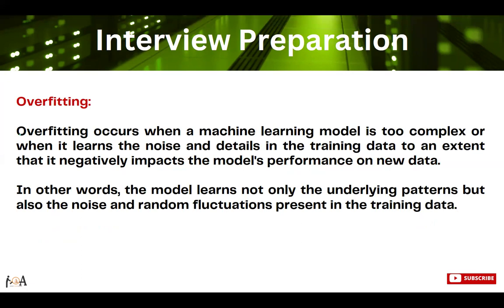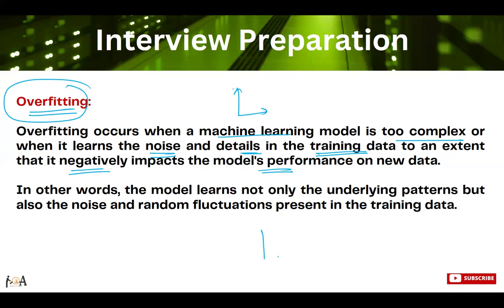Now if anyone asks about overfitting: overfitting is the condition when a machine learning model is too complex. The model is very intelligent — it learns the training data but also captures whatever noise or unnecessary details are present. It captures the pattern of noise as well, which impacts it negatively. On the training dataset, your model will perform very well and may give nearly 100% accuracy, but when new or testing data comes in, the model will perform poorly because it has also captured noise.